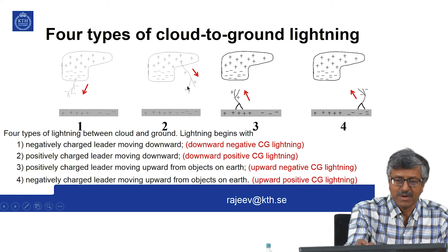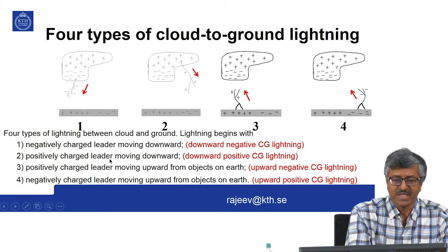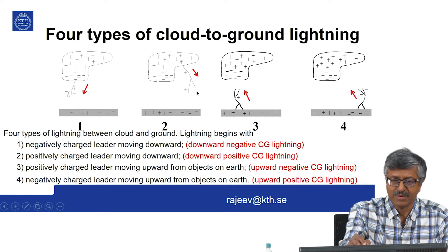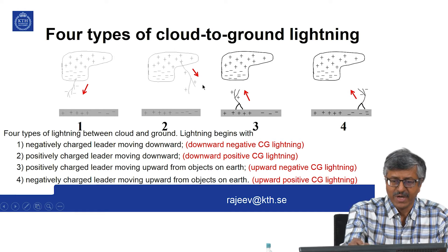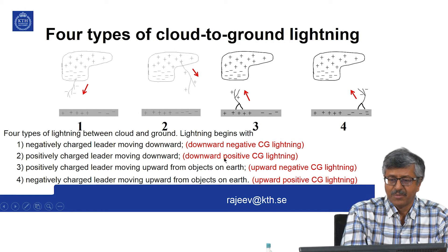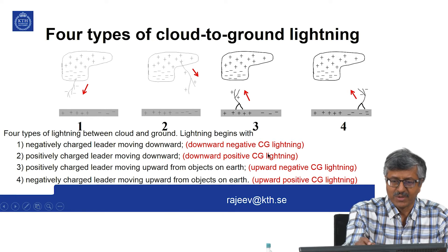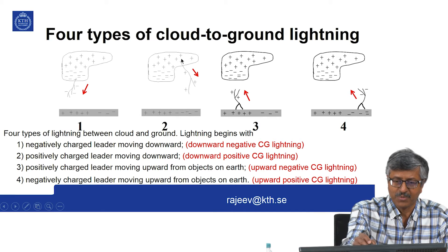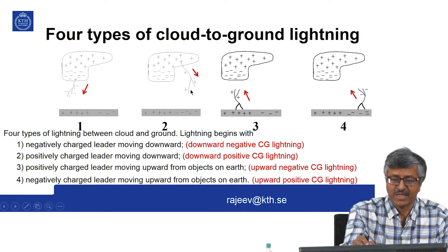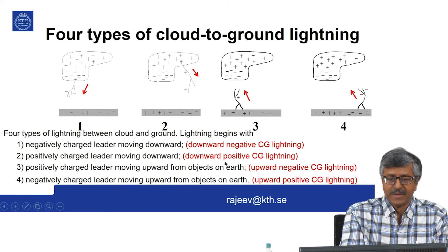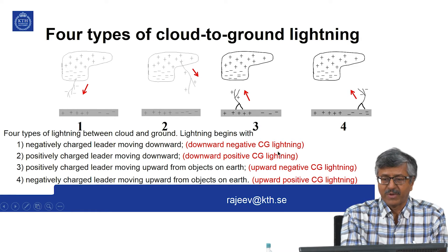In the second type, you have a positively charged leader moving downward from a positive charge source and coming to the ground. This is downward positive cloud-to-ground lightning, because at the end of the event the positive charge is neutralized or lowered to earth.